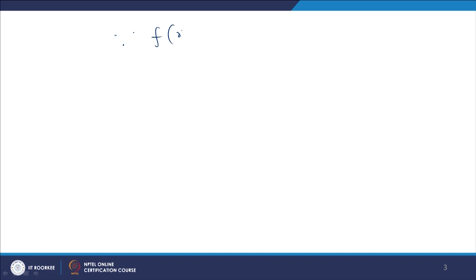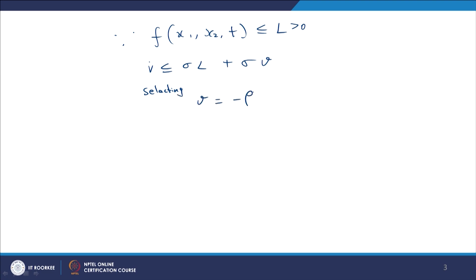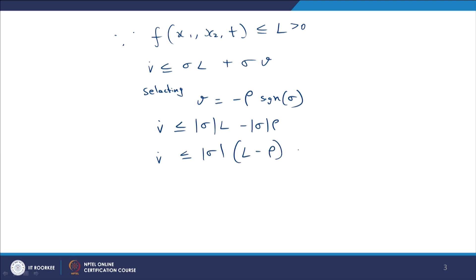Since |F(x₁, x₂, t)| ≤ L, which is a positive value, we have V̇ ≤ σ·L + σ·v. Selecting the new variable v = -ρ·sgn(σ), we have V̇ ≤ |σ|·L - |σ|·ρ, thus V̇ ≤ |σ|·(L - ρ), say equation 1.